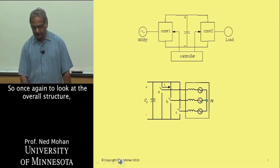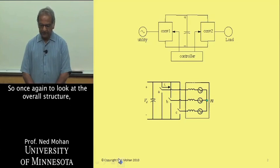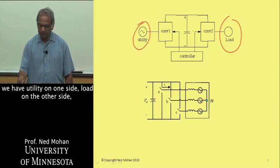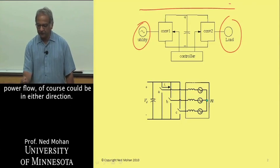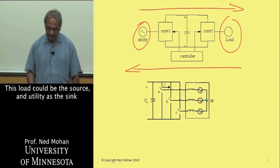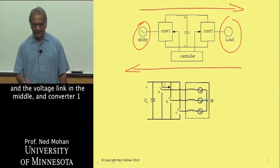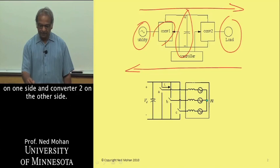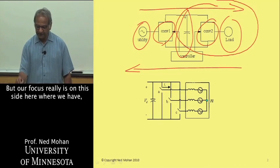So once again, to look at the overall structure, we have the utility on one side and load on the other side. Power flow could be in either direction. This load could be the source and utility as the sink. There's a voltage link in the middle and converter one on one side and converter two on the other side.